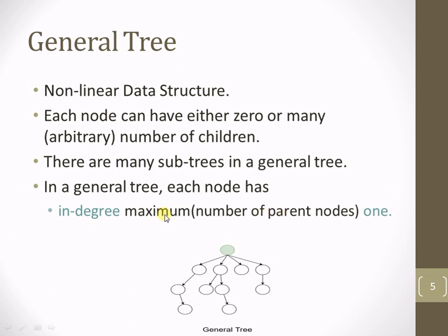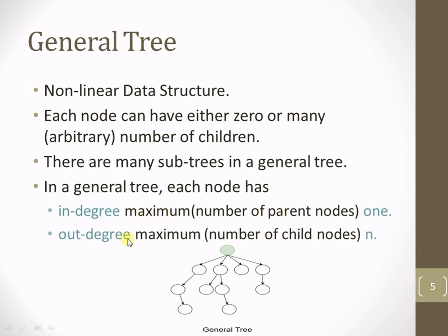The main difference is with respect to the out-degree. For the out-degree, the maximum number of child nodes are arbitrary — they are n. This is not the case with the binary tree; for the general tree the outgoing edges from every node are maximum up to n, and they are arbitrary with no restriction.